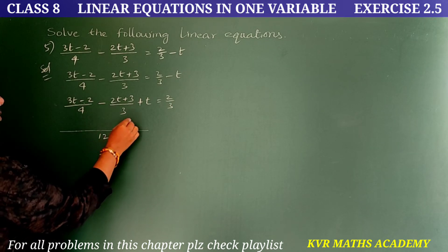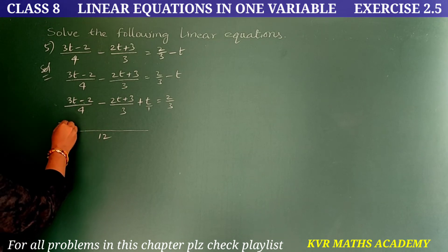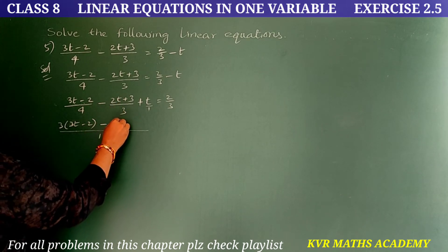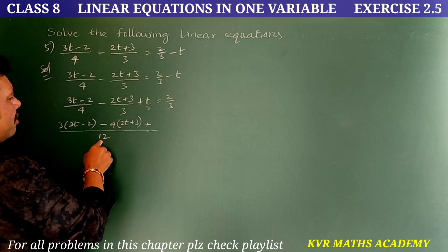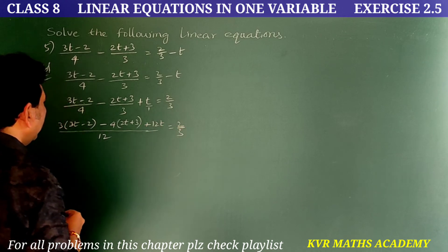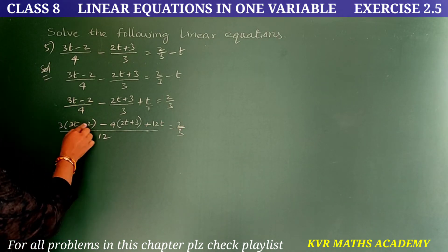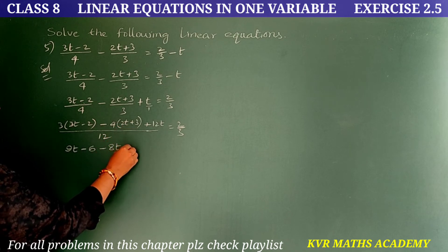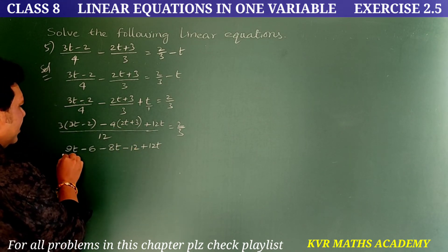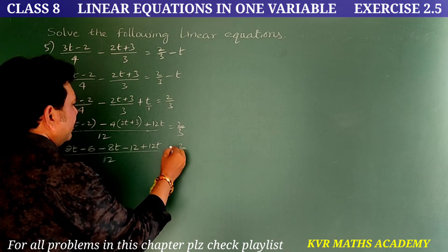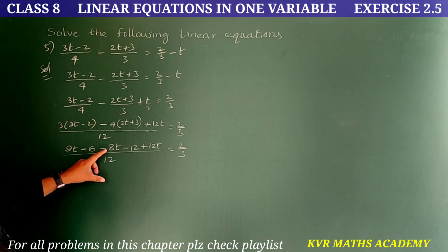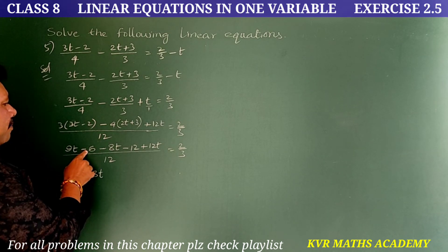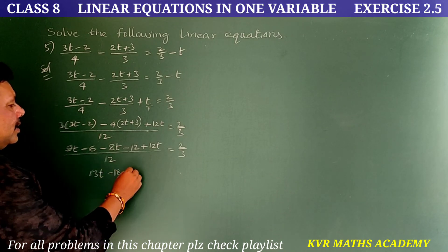LCM of 4, 3, and 1 is 12. Multiply through: 3(3t-2) - 4(2t+3) + 12t = 12 × 2/3. Expanding: 9t - 6 - 8t - 12 + 12t = 8. Combining t terms: 9t - 8t + 12t = 13t. Constants: -6 - 12 = -18. So 13t - 18 = 8.